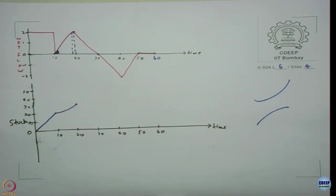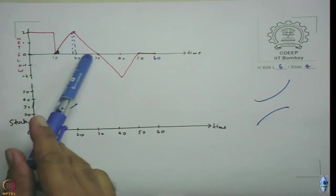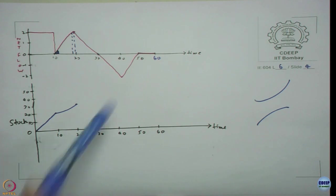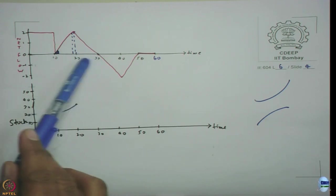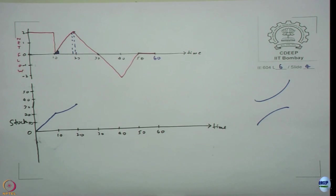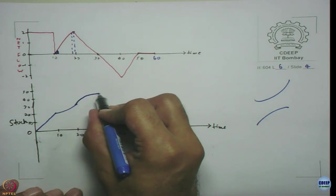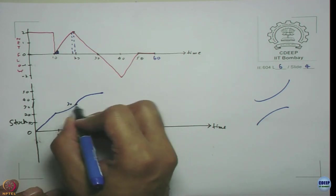Then what happens from 20 to 30? The stock will increase because the flow still shows positive values, though at a decreasing rate. Every time unit some positive quantity is added. Large quantities are added first, then smaller and smaller units, until a total of 10 more units are added — the area under the curve remains 10. So the stock reaches 40, but with a concave-downward shape.